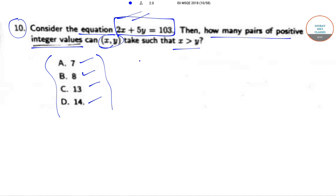We have been given that 2x + 5y = 103, where x and y belong to the positive integers and x is greater than y. These are the conditions.